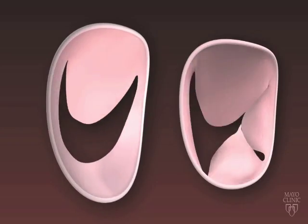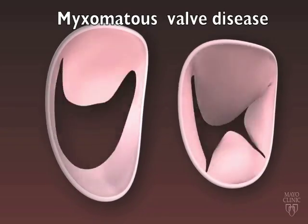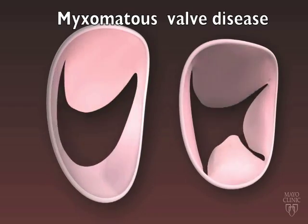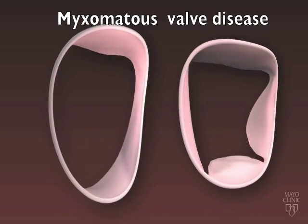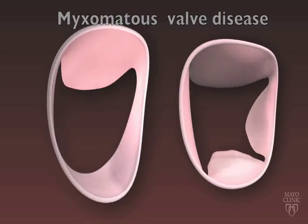In myxomatous mitral valve disease, these indentations may be larger and longer with a cleft-like appearance. Cleft-like indentations are important to identify, if present, since they can be associated with pathological valve regurgitation and failure of mitral valve repair. However, localizing and confirming the presence of a cleft-like indentation by 2D echocardiography can be difficult.